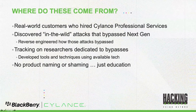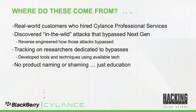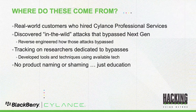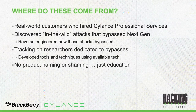So just a real quick summary — where did these attacks actually come from? These are real-world attacks that were essentially reverse engineered from customers who hired our professional services. They hired us to come in and either stop a breach that was currently happening, contain that incident, or figure out what happened. As part of that investigation, one of the things customers wanted to understand was: how did that attack actually bypass the latest, greatest next-gen technologies they had deployed, both on the endpoint and in the gateway?